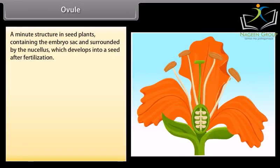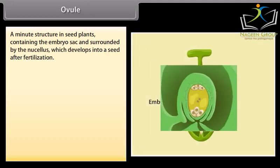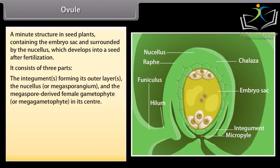Ovule. A minute structure in seed plants containing the embryo sac and surrounded by the nucellus which develops into a seed after fertilization. It consists of three parts: the integuments forming its outer layers, the nucellus or megasporangium, and megaspore-derived female gametophyte or megagametophyte in its center.